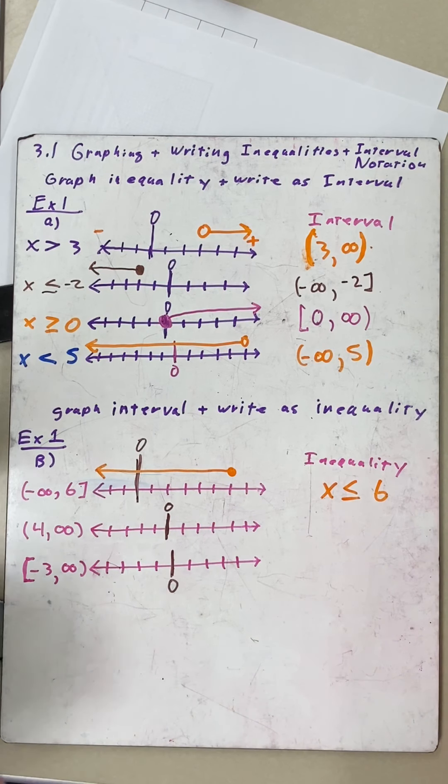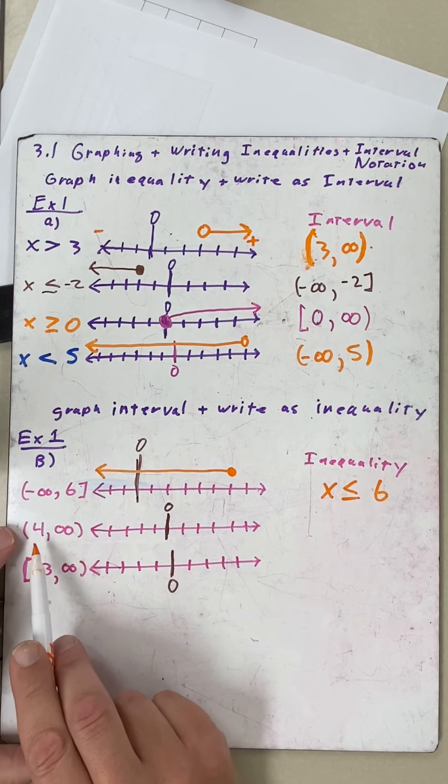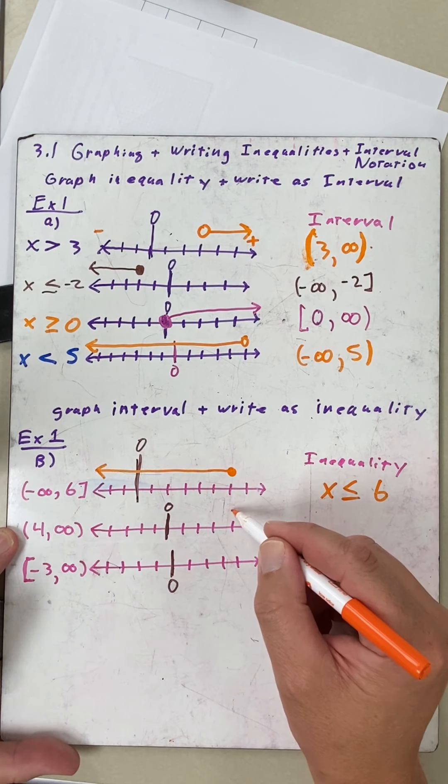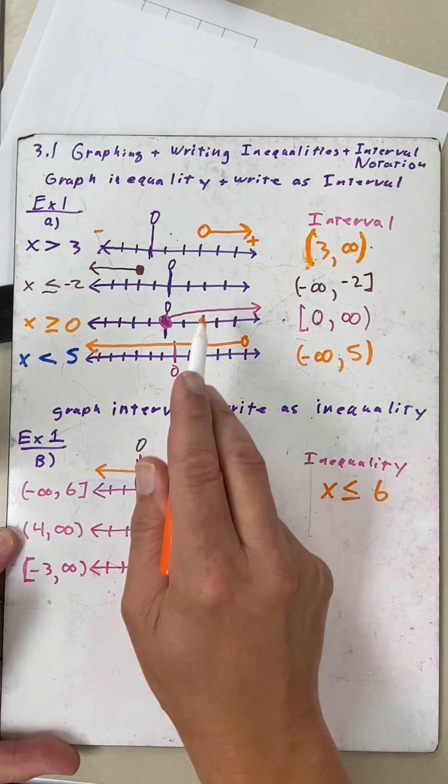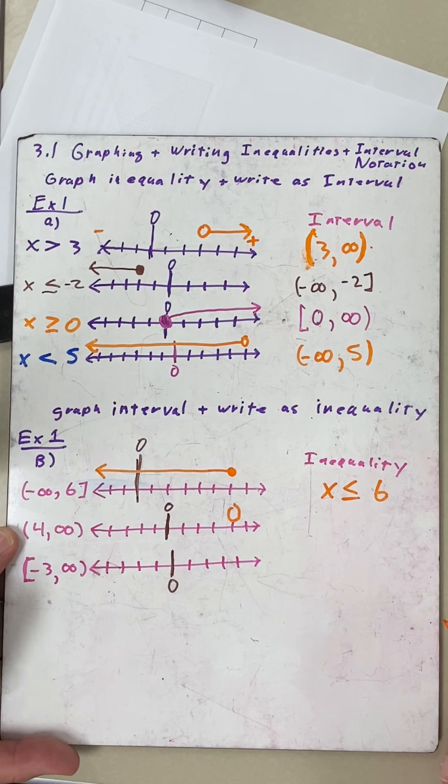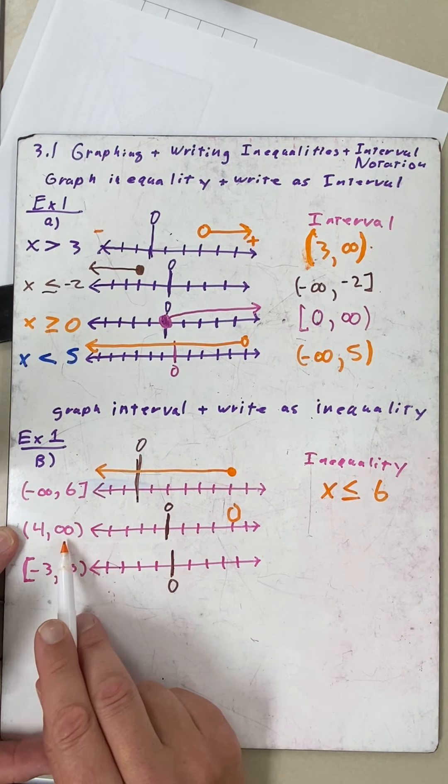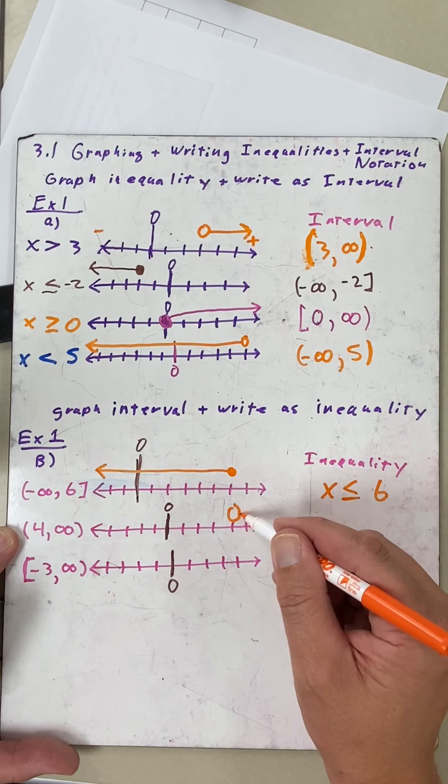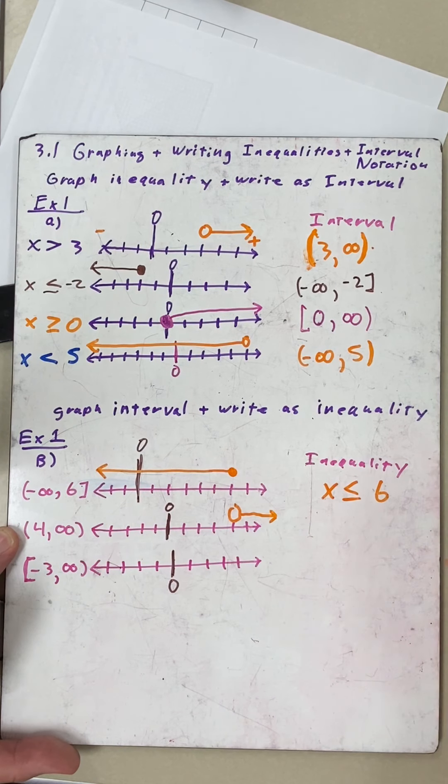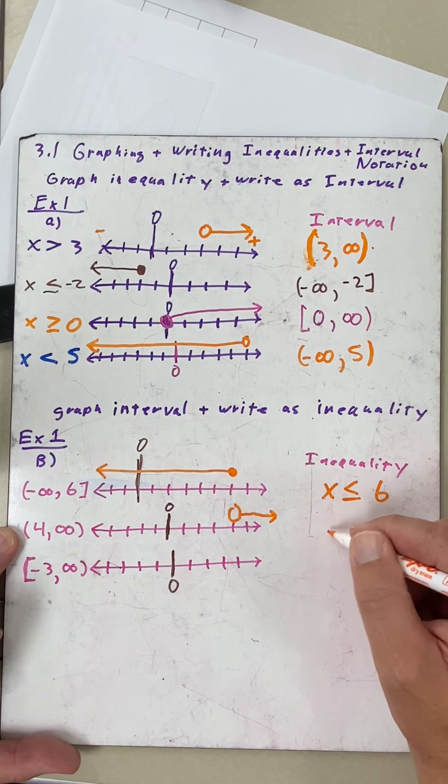Because it's a closed circle, we're going to put a bar for bracket, which means it includes the six. Boom, done. Now I'm going to go to four: one, two, three, four. Put an open circle this time because it's a parenthesis. This time we're going to positive infinity. This is saying this is your left, this is your right, so we're going this way.